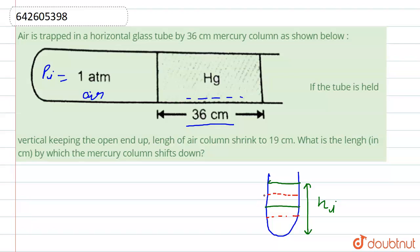at that position to at that position, so its height from that position is h_f. And we have to calculate what is the length by which the mercury column shift down. And it shift at a distance, so we have to calculate this distance.